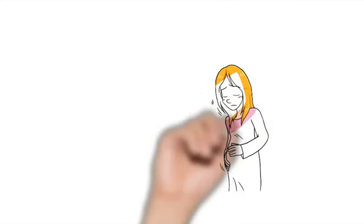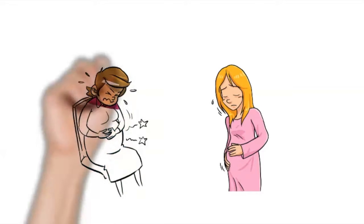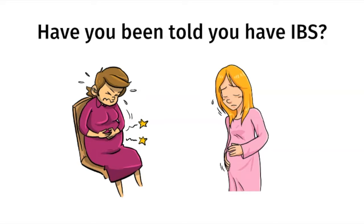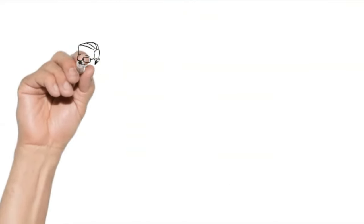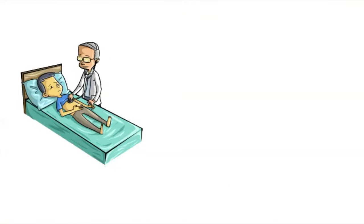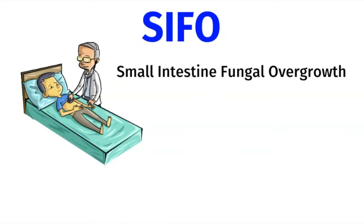Do you suffer from persistent bloating, abdominal pain, inconsistent bowel habits, or nausea? Have you been told you have IBS? Well, it could be due to an overgrowth of fungus in your small intestine called SIFO, also known as small intestine fungal overgrowth. SIFO was discovered by Dr. Satish Rao, a gastroenterologist at Augusta University, who published several articles on SIFO as a root cause of unexplained GI symptoms.